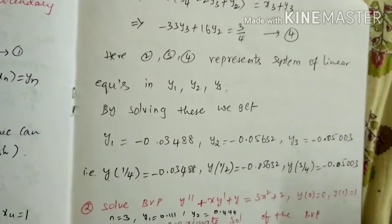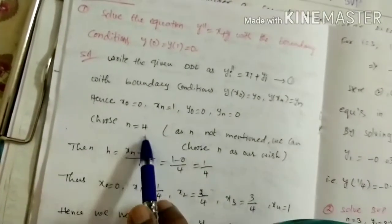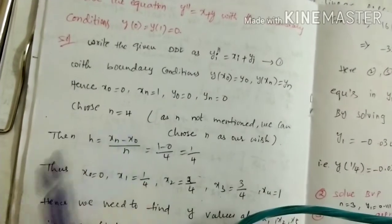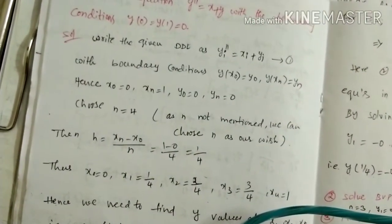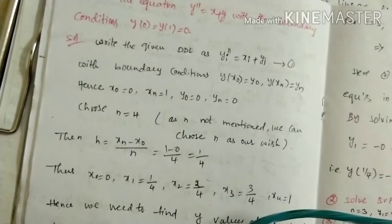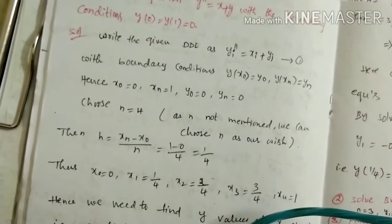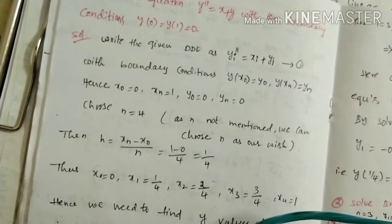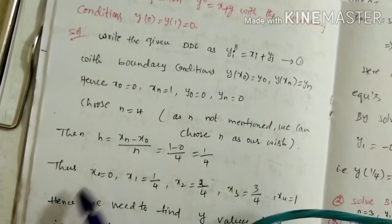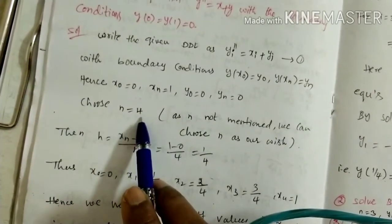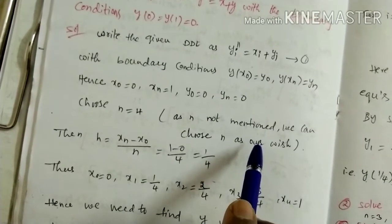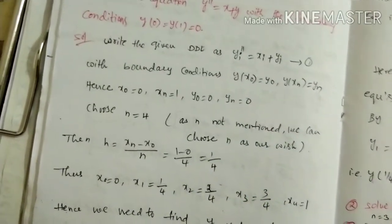This is the way to solve using the finite difference method. Choosing n is our choice completely — if n is taken as a large value, a big system of linear equations will be generated with many unknowns, making the process more tedious. It is always better to choose n = 3 or n = 4 if n is not given in the problem. I hope you understood. Thank you.